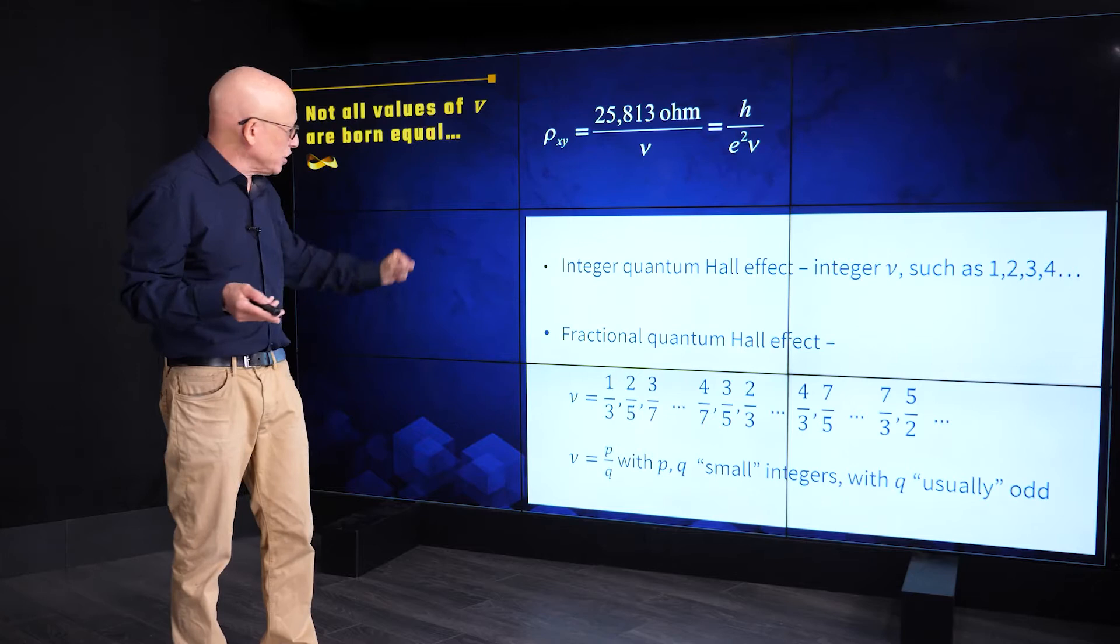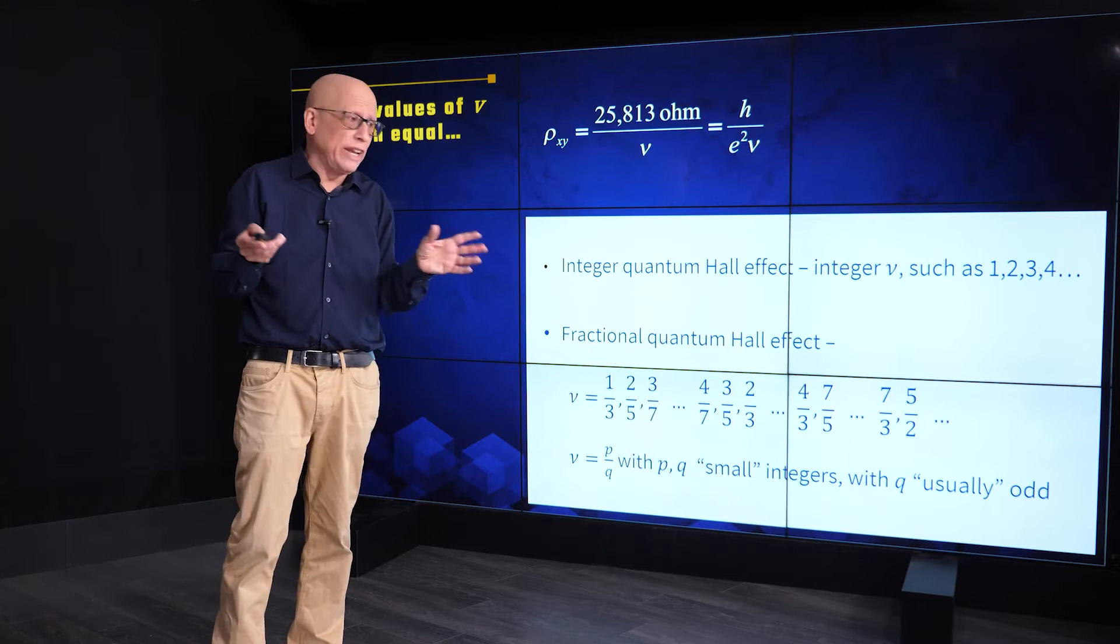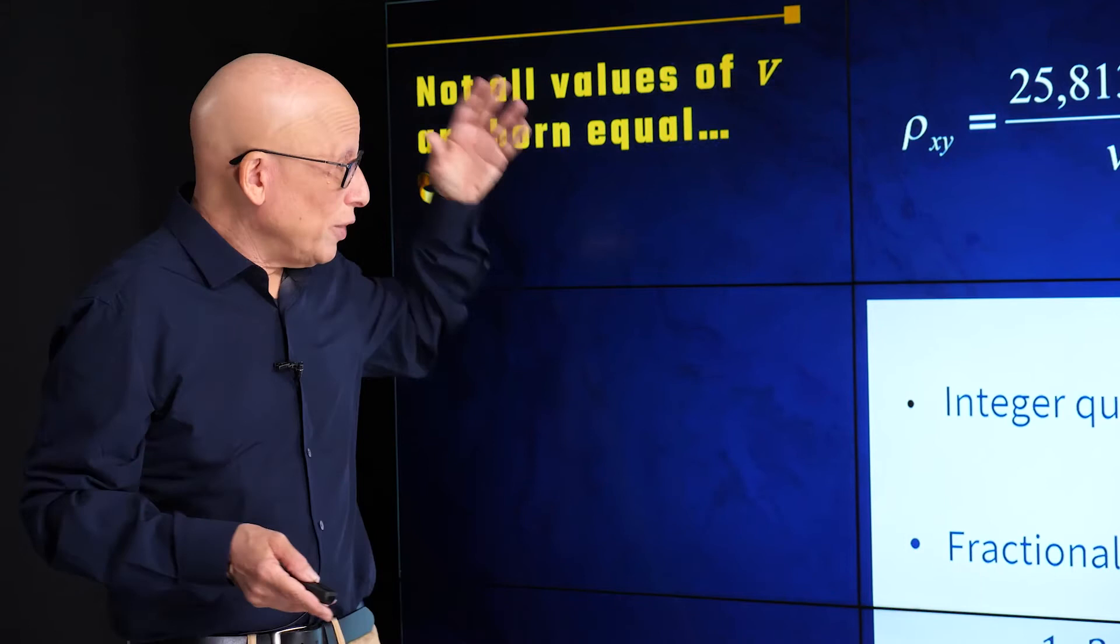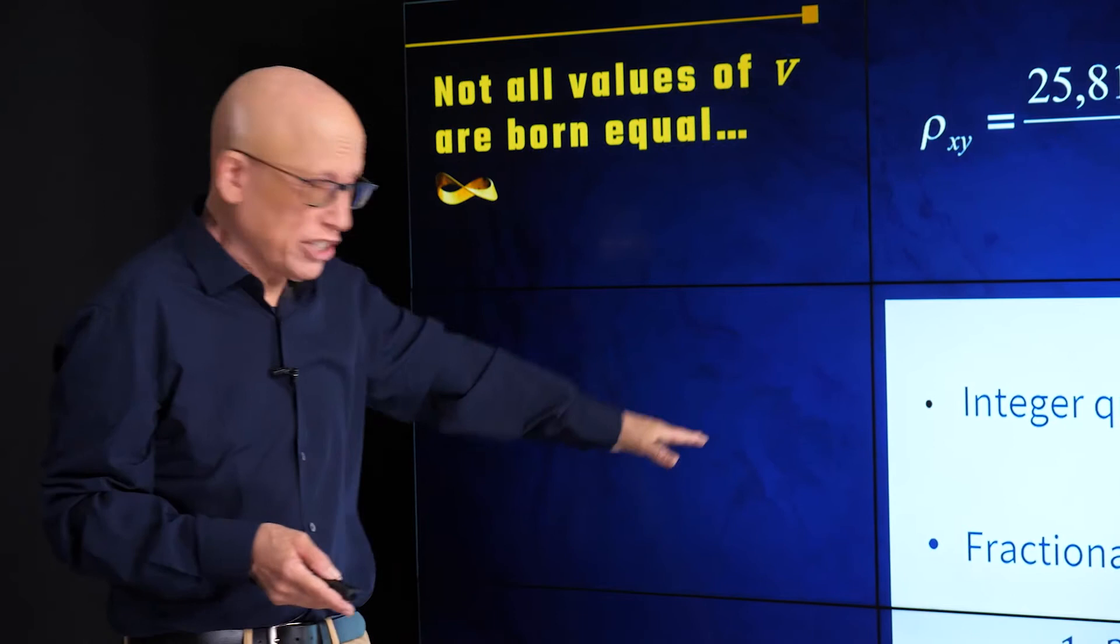So, saying it in a very non-mathematical way, those fractions are of the form p over q, where p and q are kind of small integers. You see 1, 2, 3, 7, 11, these numbers. And q is usually, for whatever that means, it's usually odd. So this is the quantum Hall effect. The integer values of nu are the integer quantum Hall effect. The fractional values of nu are the fractional quantum Hall effect.